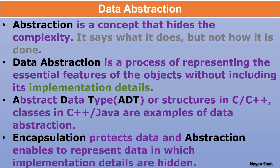We know the name of the class which is declared as private, but we don't know how that class is being used or implemented. Encapsulation protects data and abstraction enables representing data in which implementation details are hidden. Don't mix up both of them. Encapsulation is just protecting the data - it is not hiding the data; it protects the data so that nobody can use or modify it. Whereas abstraction is hiding the complexity of the program.